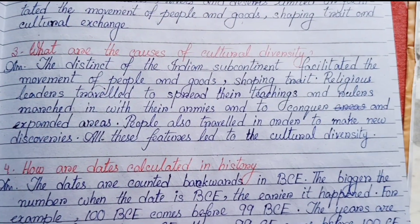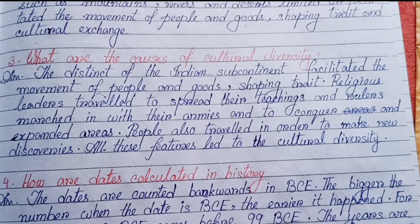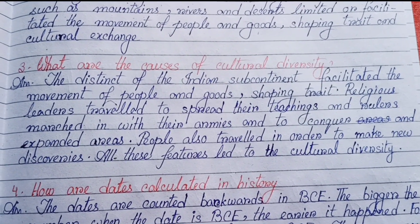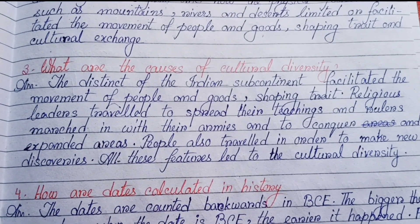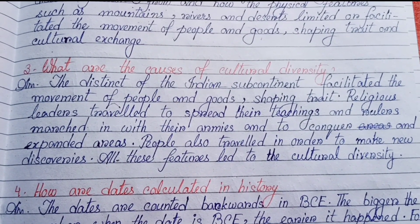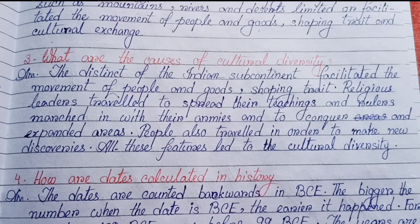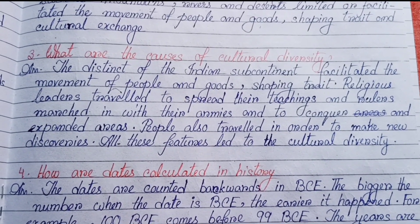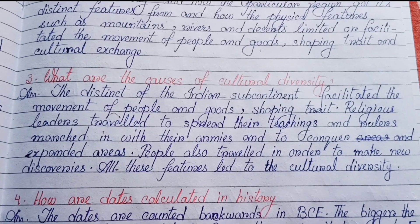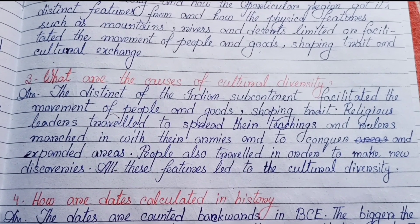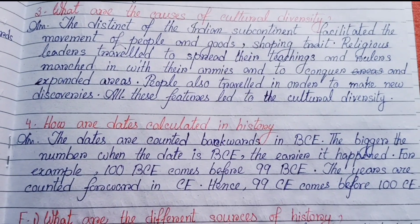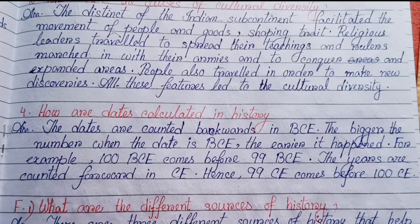Number three: what are the causes of cultural diversity? The distinct geography of the Indian subcontinent facilitated the movement of people and goods, shaping trade. Religious leaders traveled to spread their teachings, and rulers marched with their armies to conquer and expand areas. People also traveled to make new discoveries. All these features led to cultural diversity.